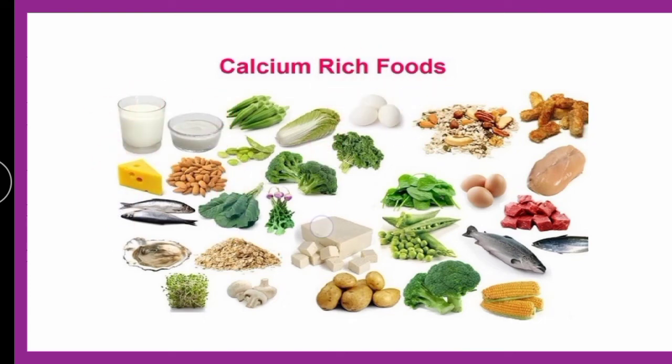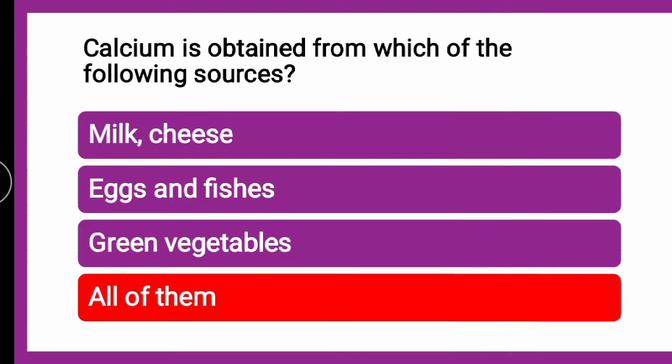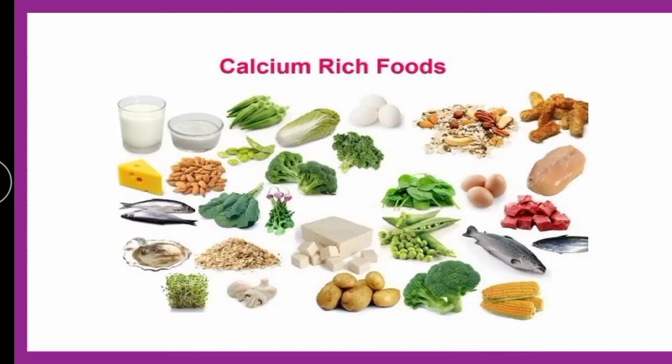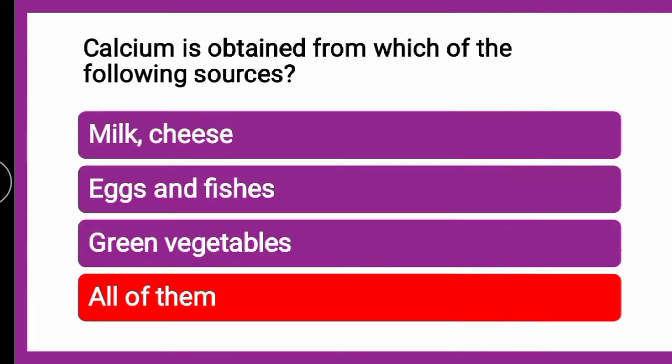Nuts and green vegetables, and corns are also there among calcium-rich foods. Looking at the options — milk and cheese, yes; eggs and fishes, yes; green vegetables are also a source of Calcium. So the correct answer is all of them.